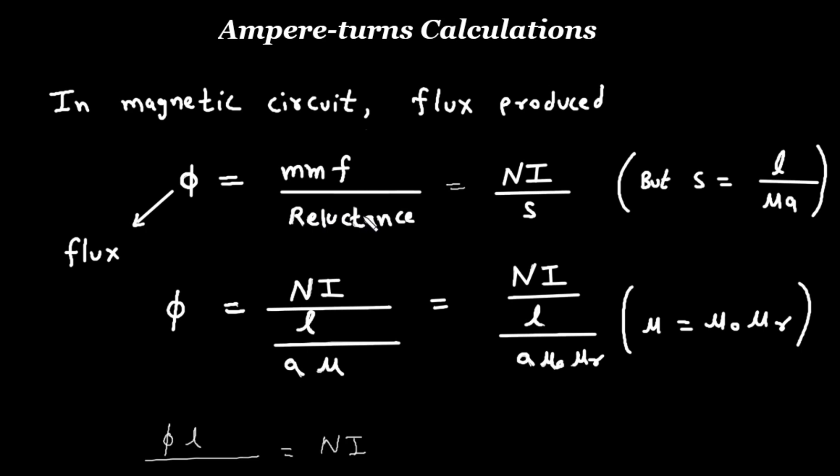Now reluctance is represented by capital S and we know that mmf, that is magnetomotive force, is equal to n into i, where n is the number of turns and i is the current. So we get phi equals n i upon s.